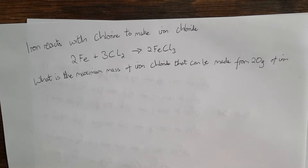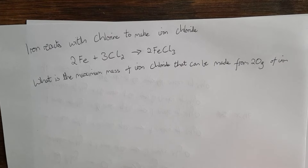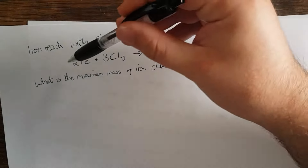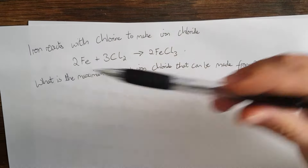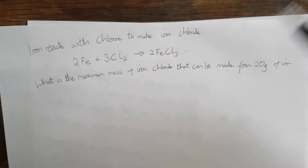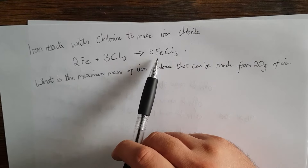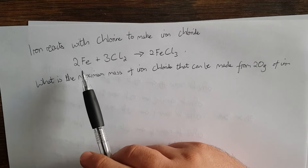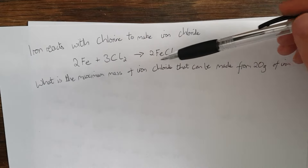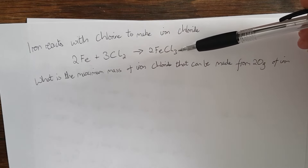At the bottom of page 61 there's a worked example. We're going to use our equation and this mole ratio with a new example. The question says iron reacts with chlorine to make iron chloride. We've got the balanced symbol equation — it's already balanced for us. The question asks: what is the maximum mass of iron chloride that can be made from 20 grams of iron? The equation tells me that two moles of iron plus three moles of chlorine makes two moles of iron chloride. You might be tempted to say it's the same 20 grams, but it's not — we've mixed iron with chlorine to form iron chloride, so the formula mass is different and our overall mass will be different.